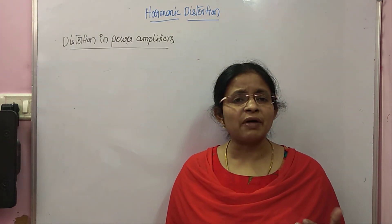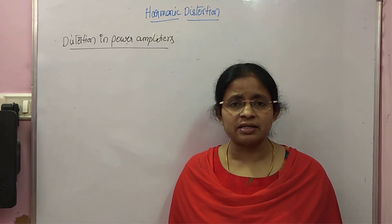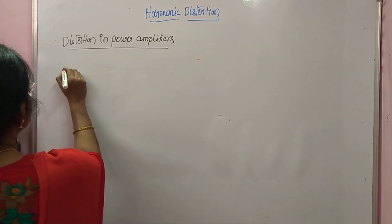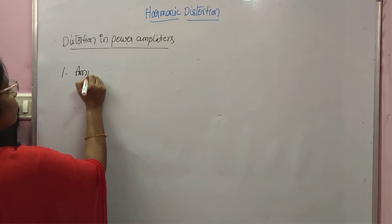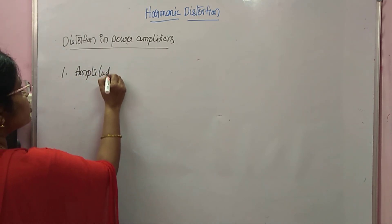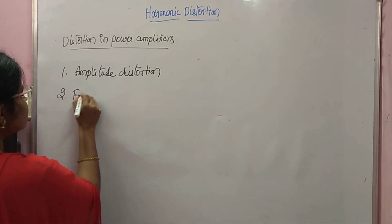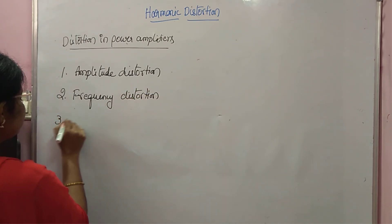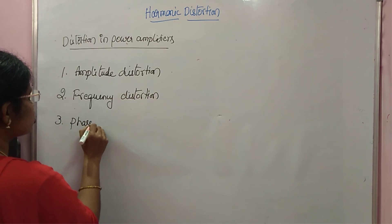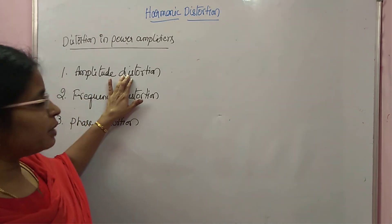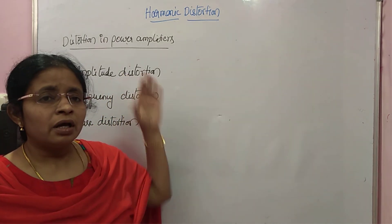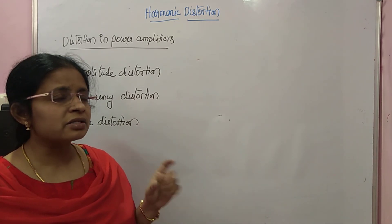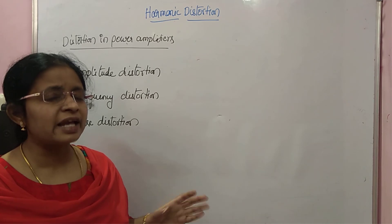The distortions for a power amplifier output can be considered in three ways: first is amplitude distortion, second is frequency distortion, and third is phase distortion. Remember, amplitude distortion does not mean increasing or decreasing the amplitude — it is shape distortion, a change in shape.